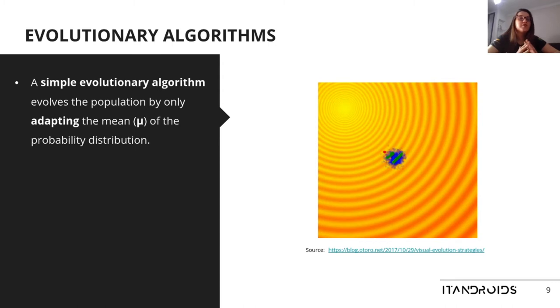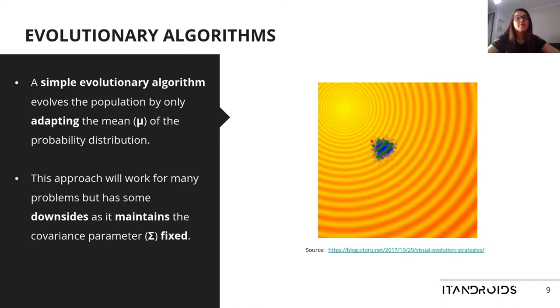A simple evolutionary algorithm evolves the population by only adapting the mean of the probability distribution, as illustrated in this animation. Even though this approach will work for many problems, it has some downsides, as it maintains the covariance parameter fixed. For example, if we are far from the optimal solution, we would like to explore more of our search space. Also, if we are confident we are close to an optimal solution, we would like to fine-tune it. However, if we maintain the covariance parameter fixed, we will not be able to spread or shrink our samples to do that.